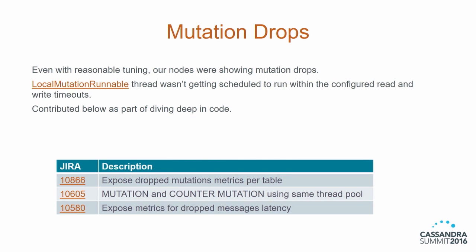Even with reasonable tuning, our nodes were showing mutation drops. Digging into the code, we found that the local mutations runnable thread wasn't getting scheduled to run in the allotted time. We contributed a few things back to the Cassandra codebase. First, we exposed a metric that shows how many drop mutations and drop messages are happening on a per-table basis. We also expose a metric showing how much longer the node took to process a mutation before dropping it, so you know how much more time to give the node. Both metrics are now available in 2.1 versions. We also found that mutations and counter mutations were using the same thread pool, starving each other — we fixed that too.